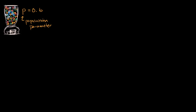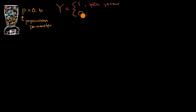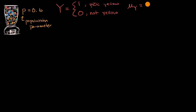Now let's review some things that we have seen before. I'm going to define our Bernoulli random variable — let's call this capital Y — which is equal to one if, when we take one random gumball out of that machine, we pick a yellow gumball, and it's equal to zero if we don't pick yellow. We know the mean of our Bernoulli random variable is going to be p, which in this particular case is 0.6.